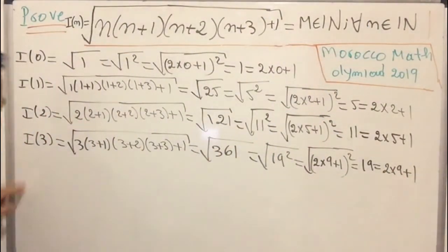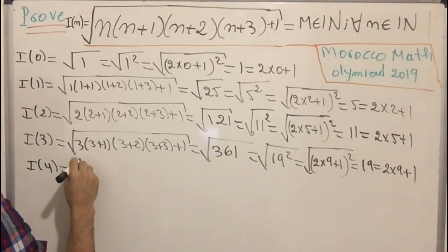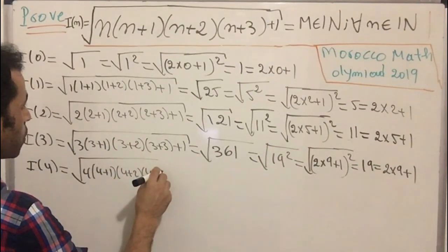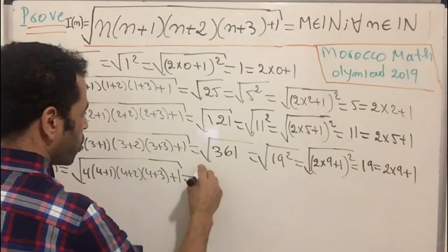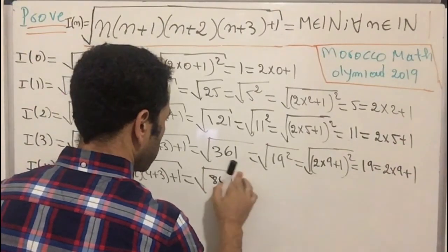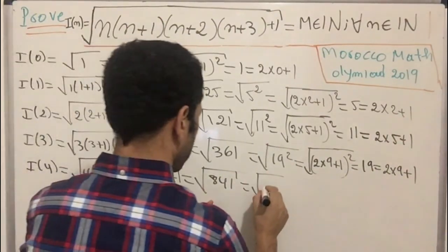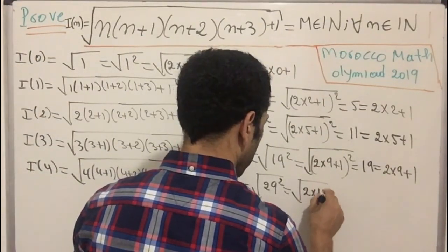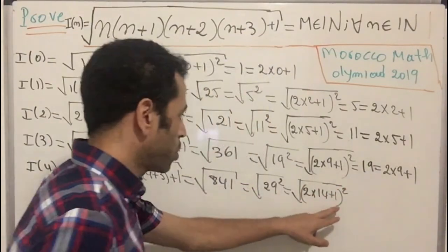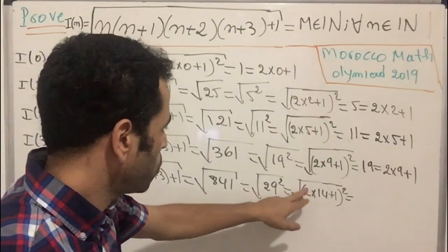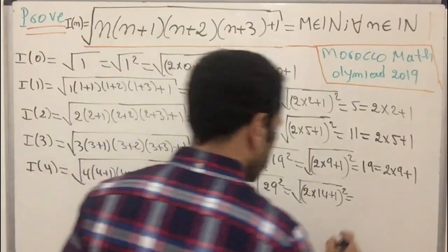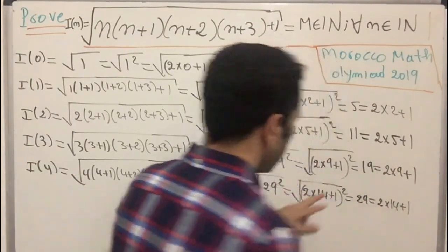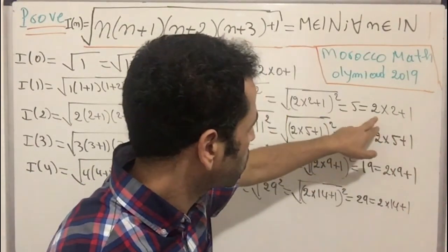For the fourth term, i(4): plugging in 4 gives 4×5×6×7 plus one, which equals 841 — that is 29². This can be written as (2·14+1)². The square root cancels with the square, so i(4) equals 29, or 2·14+1. We always get an odd number, written in the form 2k+1.